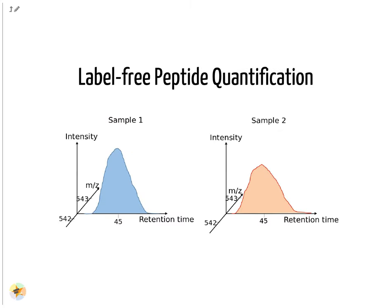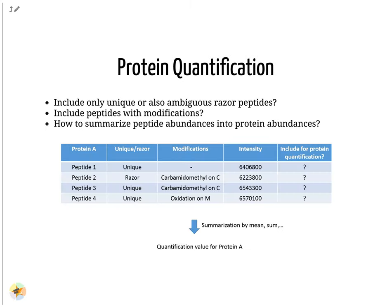For label-free quantification, all peak areas in the MS1 spectra are integrated. Peptide abundances are summarized into protein quantifications. This requires decisions about which peptides to include in the summarization: only unique peptides, only proteins with or without modifications. The protein abundance may be computed by taking the median, mean, weighted mean or sum of all its peptides.